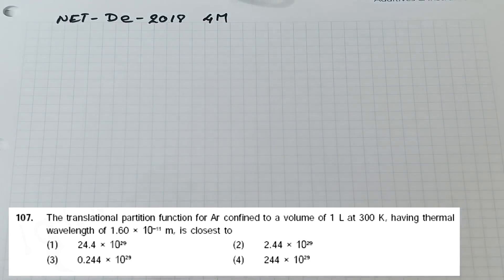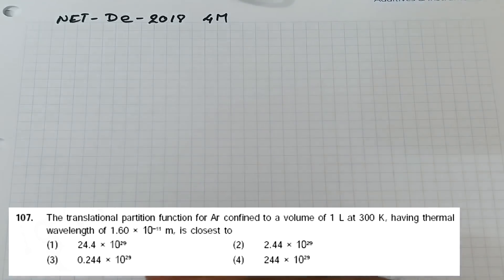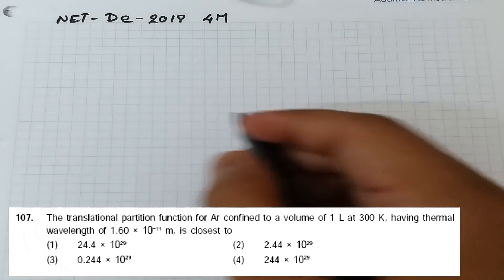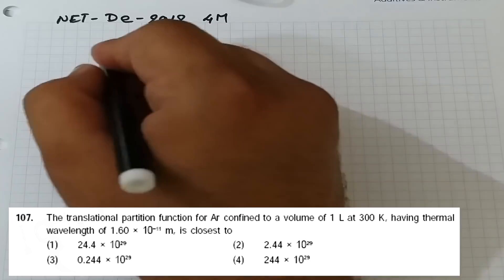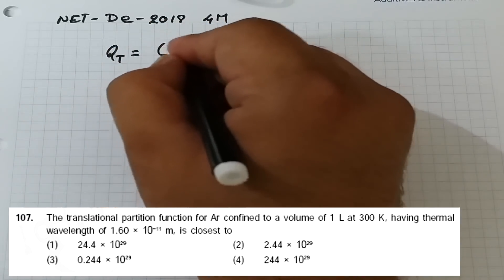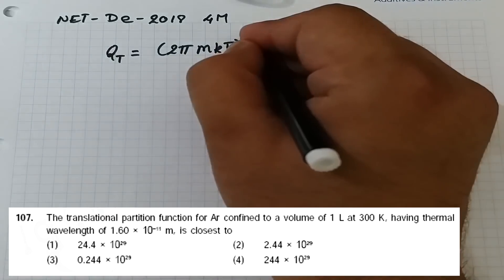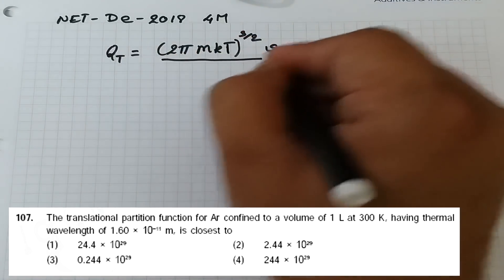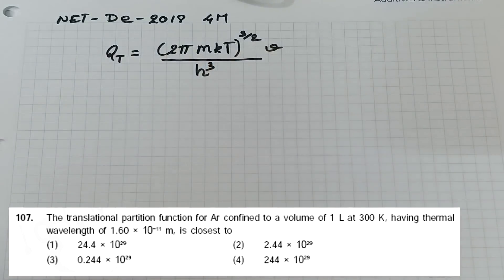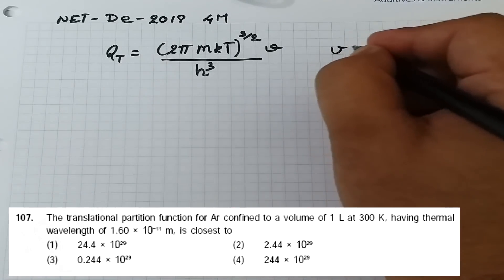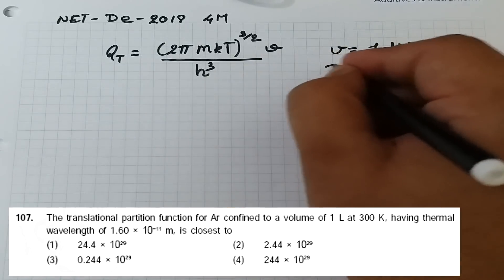For translational partition function: q_t = (2πmk_BT)^(3/2) × V / h³. The given data are: V = 1 liter, T = 300 K, and thermal wavelength Λ = 1.60 × 10⁻¹¹ m. The thermal wavelength (also known as thermal de Broglie wavelength) is: Λ = h / (2πmk_BT)^(1/2).